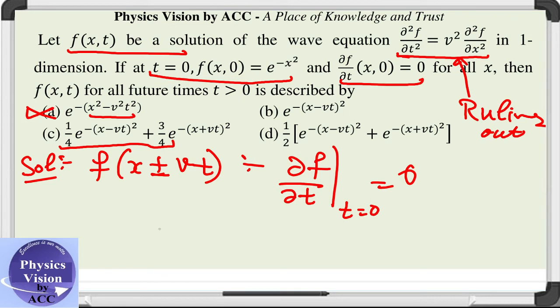It would be e raised to the power of the same factor multiplied with minus 2 times of x minus vt, x minus vt into minus v.